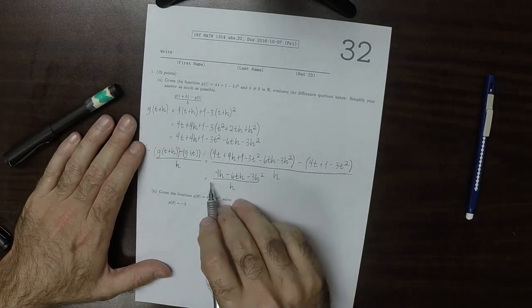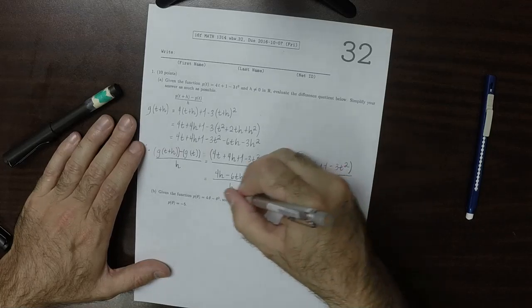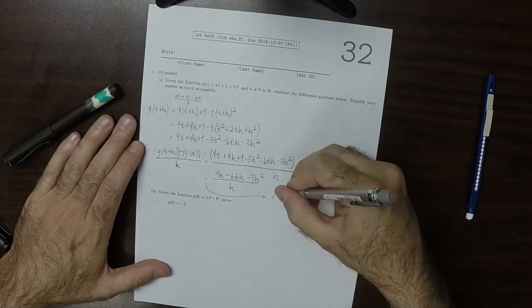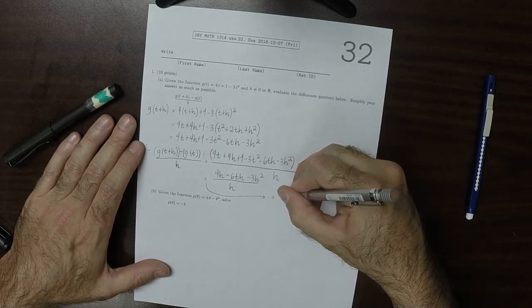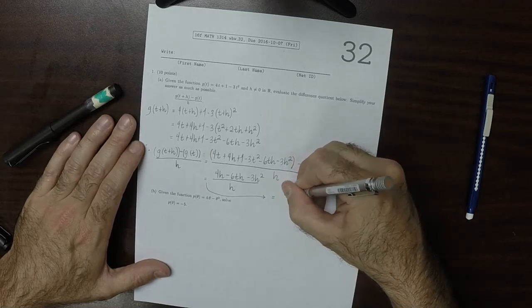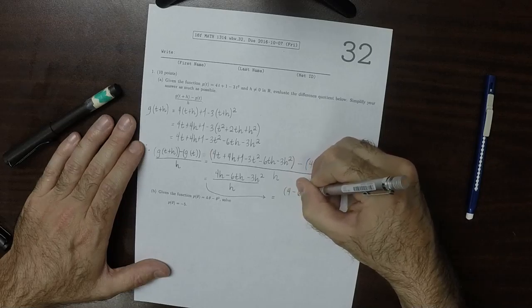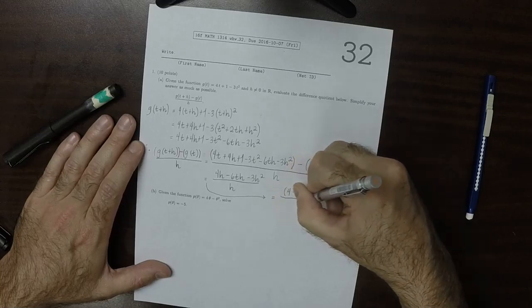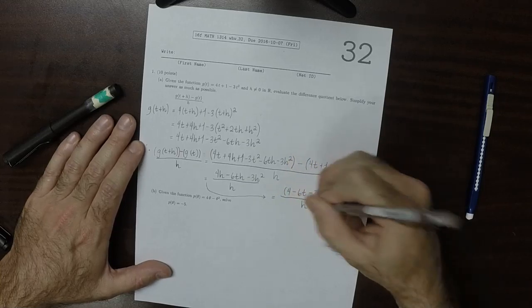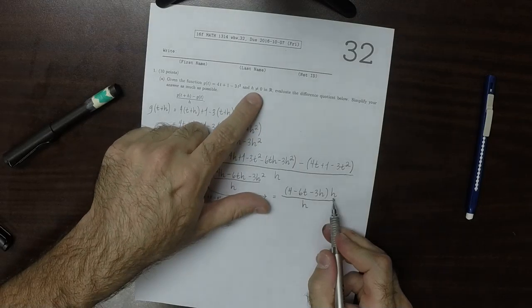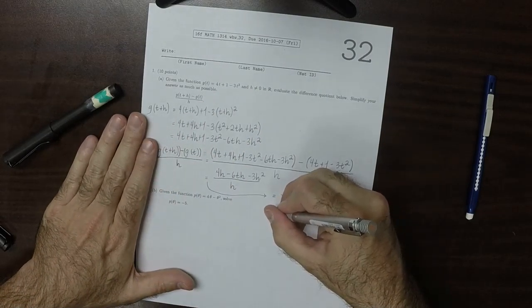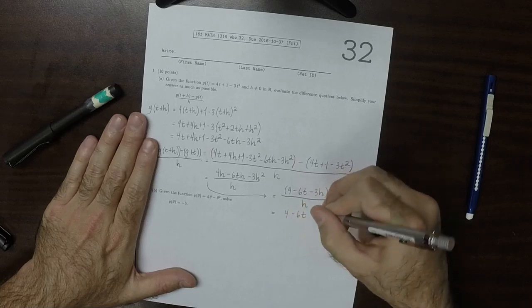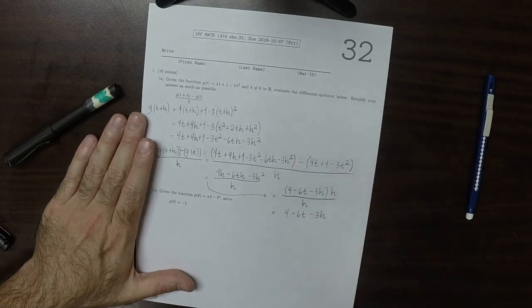Then now this has a common factor of h. So I can factor that out. So that would be (4 - 6t - 3h) times h over h. And now the h is canceled, because we were assuming that h is non-zero. So this would be 4 - 6t - 3h.